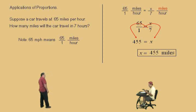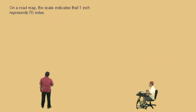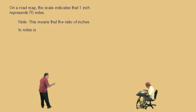All right, Charlie. Let's do another one. On a road map, the scale indicates that 1 inch is equal to 70 miles. This means that the ratio, Charlie, of inches to miles is 1 to 70, which means 1 inch is the same as 70 miles.